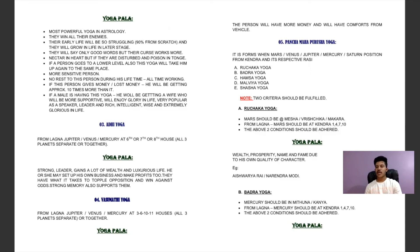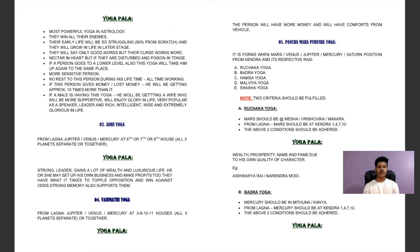Ruchaka Yoga: Mars should be in Aries, Scorpio, or Capricorn, and Mars should be in a Kendra (1st, 4th, 7th, or 10th) from the Lagna — both conditions must be met. Yoga phala: wealthy, prosperity, name and fame due to own qualities. Examples: Aishwarya Rai or Narayana Murthy — you can check their horoscopes.